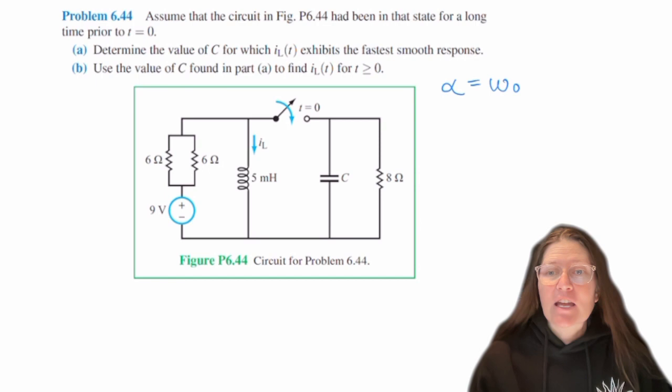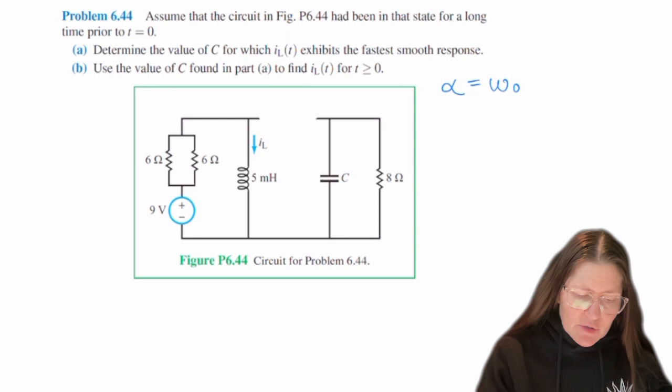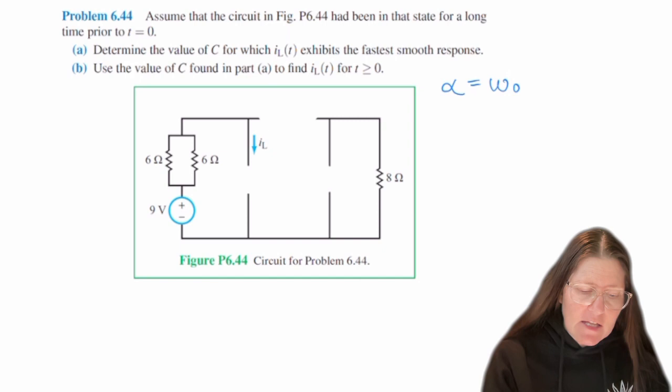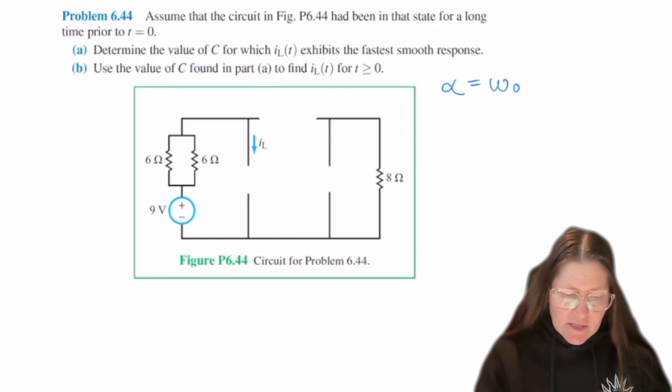So the first step is usually to find what configuration do we have, series or parallel? So we're going to look at this in the final state. And so in the final state we're going to redraw the circuit and we're going to take out all of the elements and then determine what is going on with the switch. And in the switch in the final state for this one it will be, let's see, the switch closes at t equals zero.